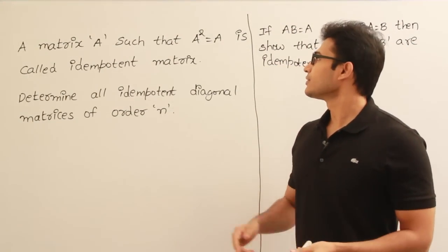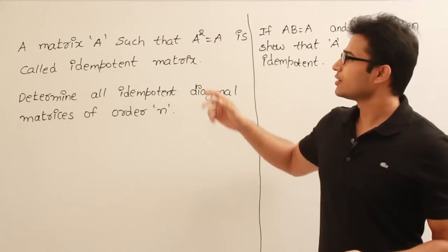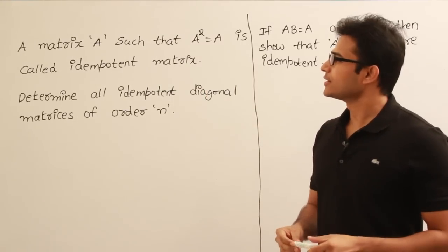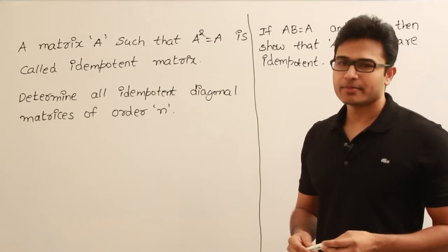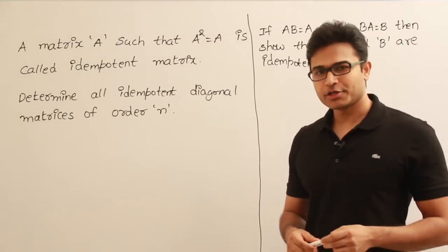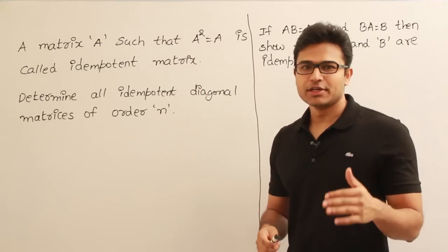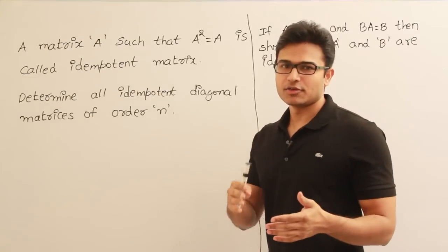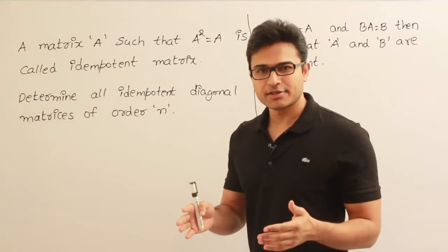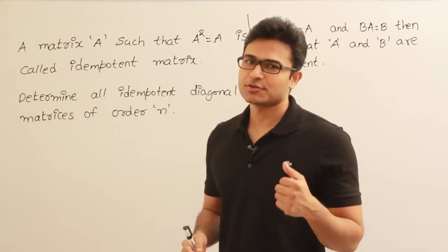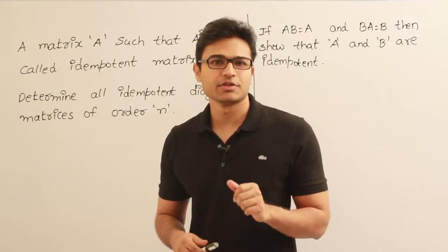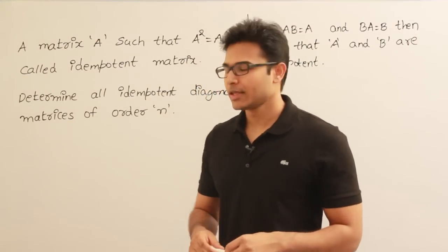A matrix A such that A squared equals A is called an idempotent matrix. If you take a matrix, square it, and get the same matrix back, such a matrix is called an idempotent matrix. That is the definition of it.